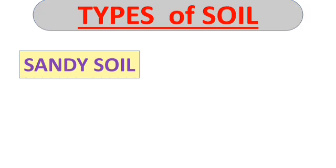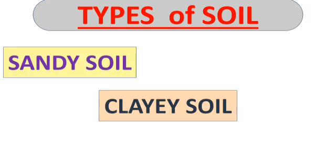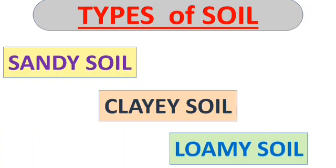Now let's see what are the different types of soil. The first one is sandy soil, the second is clay soil, and the third is loamy soil. We will learn about each of these soils in detail.